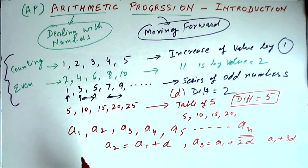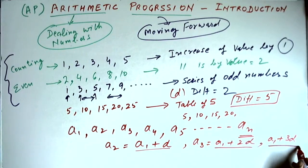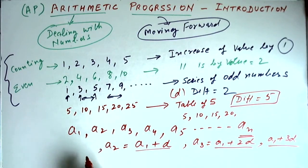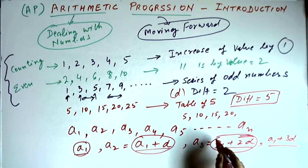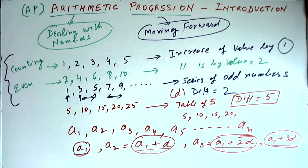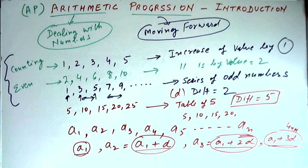So we can write the series as: a1, then a1 plus d, then a1 plus 2d, then a1 plus 3d, and so on. This is the first term, second term, third term, fourth term, and the common difference is denoted as d.